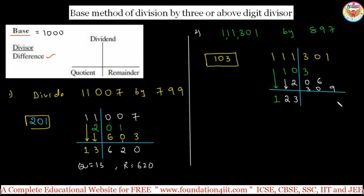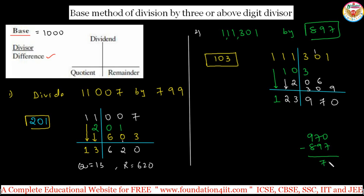Now do the normal addition. 1 plus 9 is 10, carry 1; that gives 7, and 3 plus 3 is 9 — so 970. But 897 is smaller than this remainder, so just take 970 minus 897 in mind: that is 73. So the remainder adjusts to 73, and the quotient becomes 124 — because one extra 897 is added to the quotient. So quotient is 124 and remainder is 73. If the remainder is more than the divisor, check how many divisors fit.